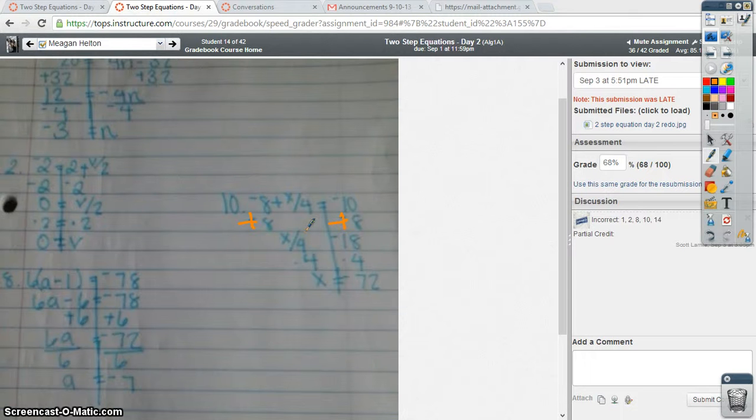You'll end up with negative... sorry, I'm stupid. This is a 4. 4 times negative 2 gives you negative 8. So that's how that goes.